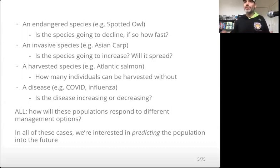What are the questions related to endangered species, or invasive species, or harvested species, or infectious disease? Here are some example questions that are commonly used with models. For an endangered species, we might want to know if the species is in decline or not, and if so, how fast is it declining? For invasive species, is the species going to increase or not? Will it spread spatially? So you have both a temporal question about change in time, but also a spatial question, a spatiotemporal question about spread.